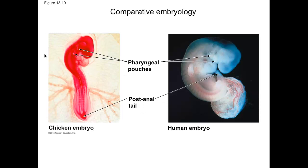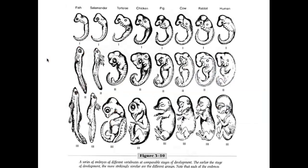You can also compare the development process across different organisms by looking at embryology. The early stages of development — the embryo — are very similar across many different vertebrates. A fish, salamander, tortoise, chicken, pig, cow, rabbit, and human all look remarkably similar in those very first stages. This points to the fact that in the past there was a vertebrate ancestor that developed in this same way, and over time different vertebrate lineages diverged. Every single one of these organisms has a tail in the early embryo.